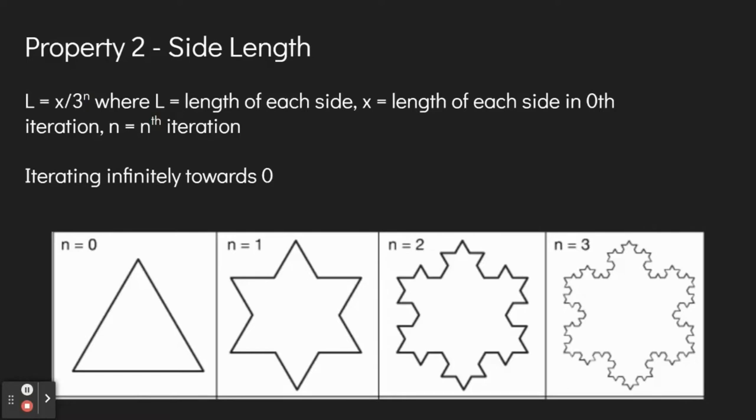This goes back to the pattern of the Koch line, where each line, or side in this case, is divided into three equal parts, and an equilateral triangle is drawn using the middle segment as a base. This means that this division happens n times, so the original length x is divided by three to the nth power times. Iterating this so that n is tending towards infinity results in the length of each side becoming smaller and smaller.